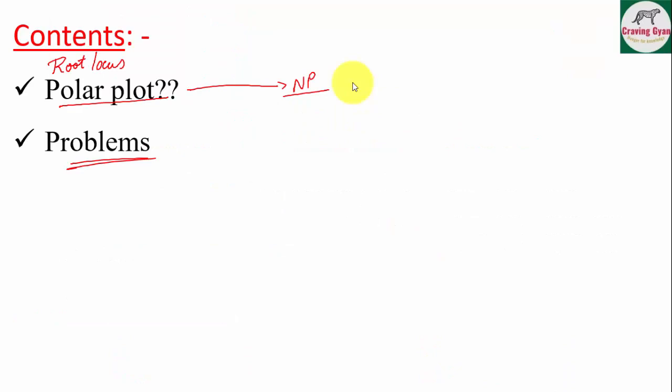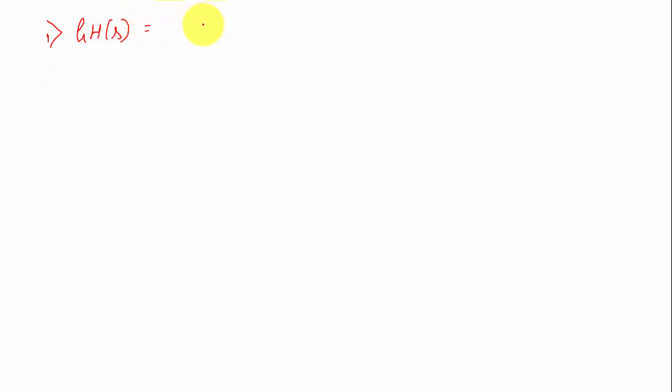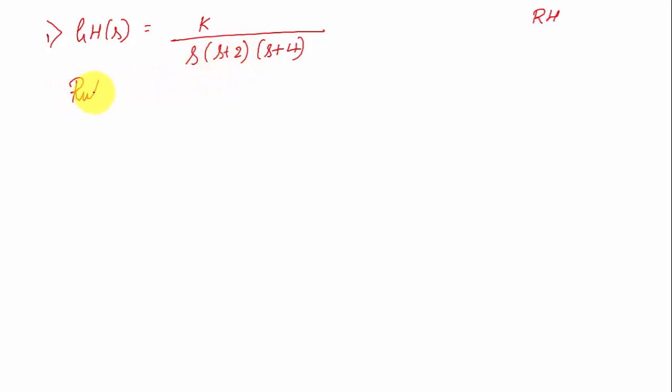Root locus means the roots of the characteristic equation, and locus means a path. Let me consider the open loop gain GH(s) = K / [s(s+2)(s+4)]. We are going to apply all eight rules to draw the root locus for this transfer function.